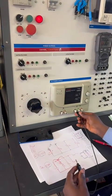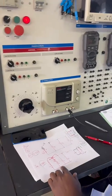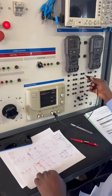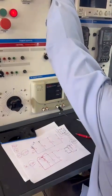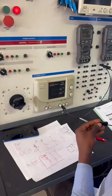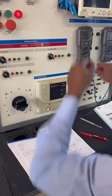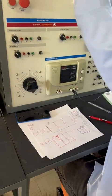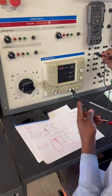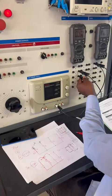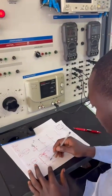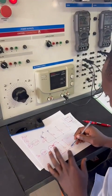from the negative of the supply, it goes to negative of R1, right? Then from the negative of R1, it goes to negative of R2. And from the negative of R2, it goes to negative of R3. So we are done connecting our negative rails.